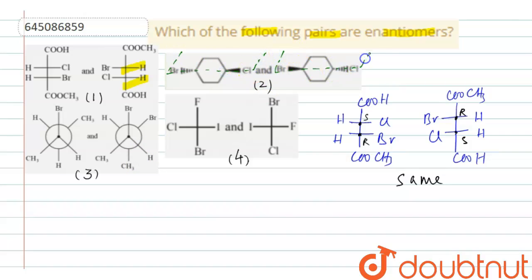Here also, this is the plane of symmetry. Therefore, this can divide the molecule in two equal halves. So they cannot be optical isomers first.